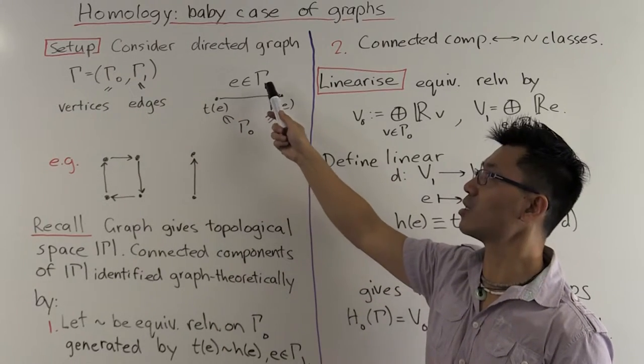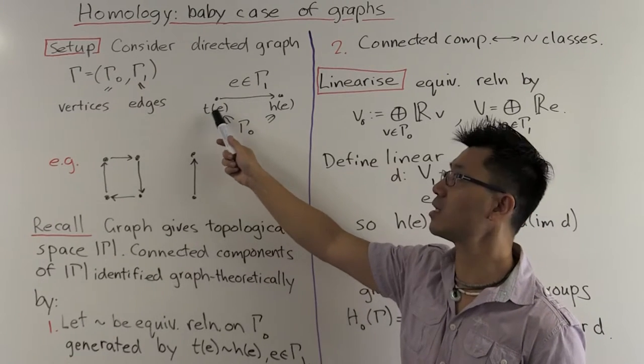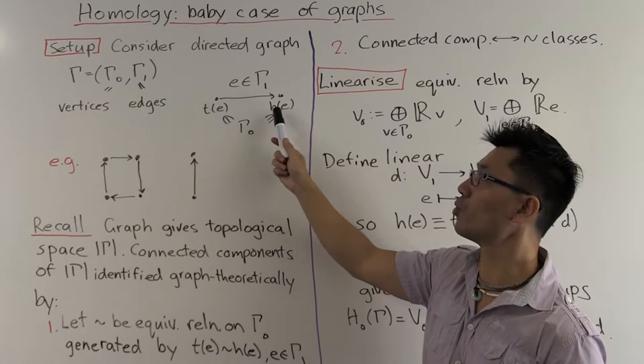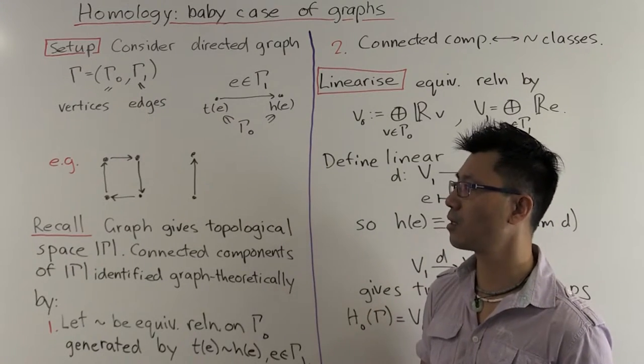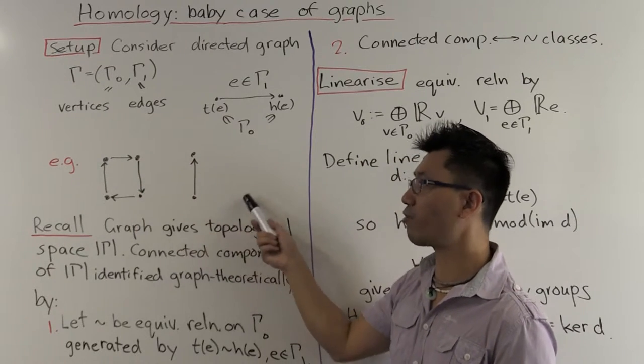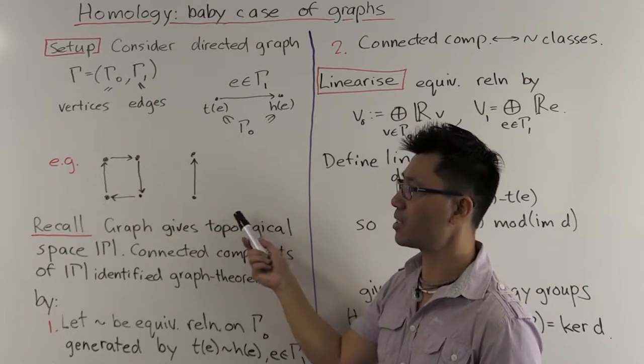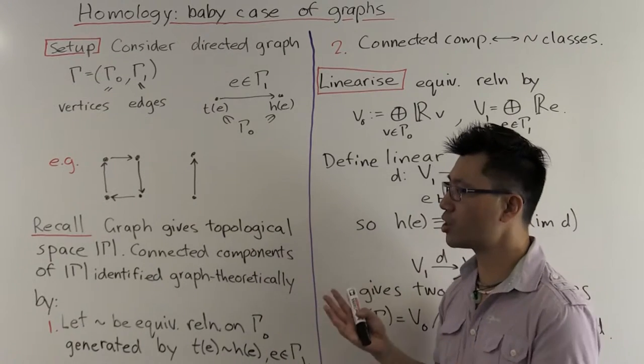So if E is an edge in gamma 1, it goes from the tail of E, T of E, to the head of E, H of E. They're the vertices. Usually we just draw the directed graph rather simply like this, and here's an example.